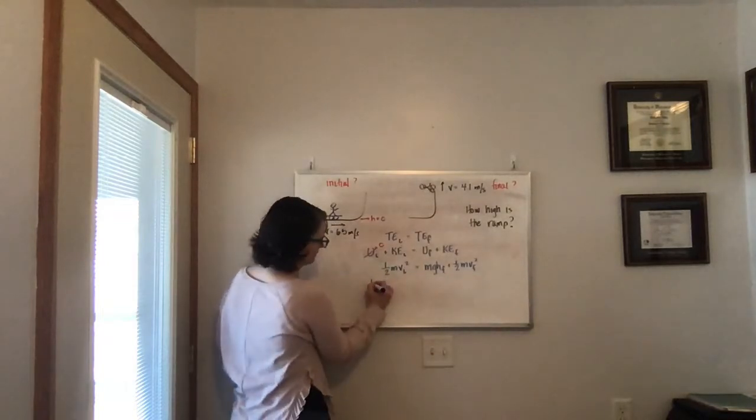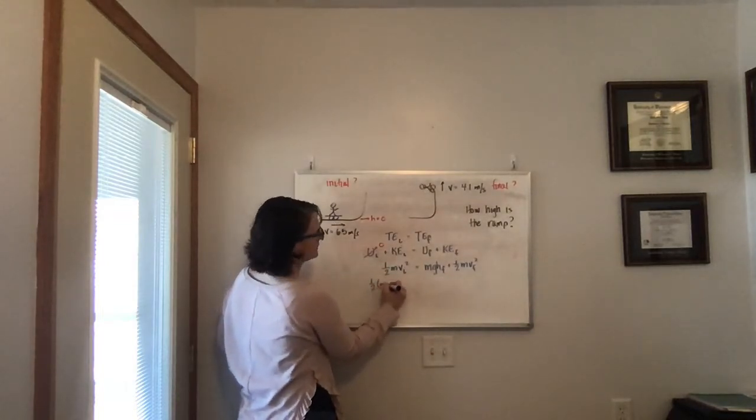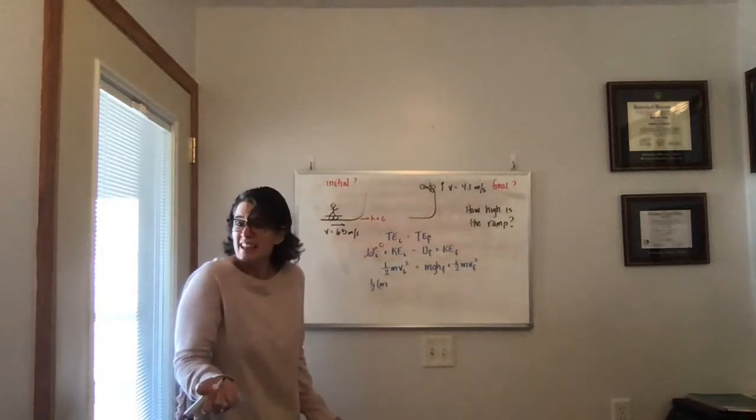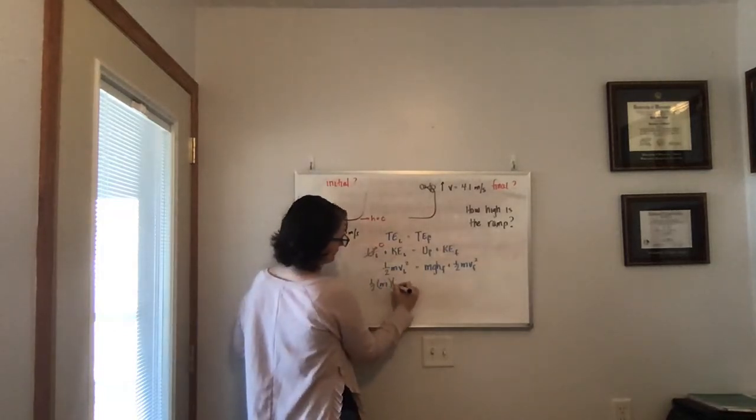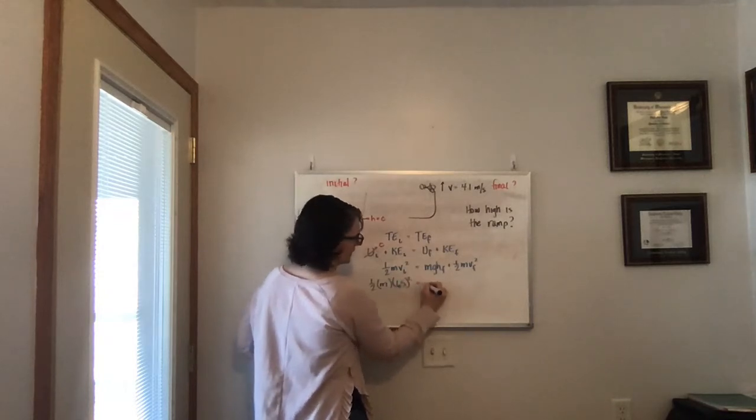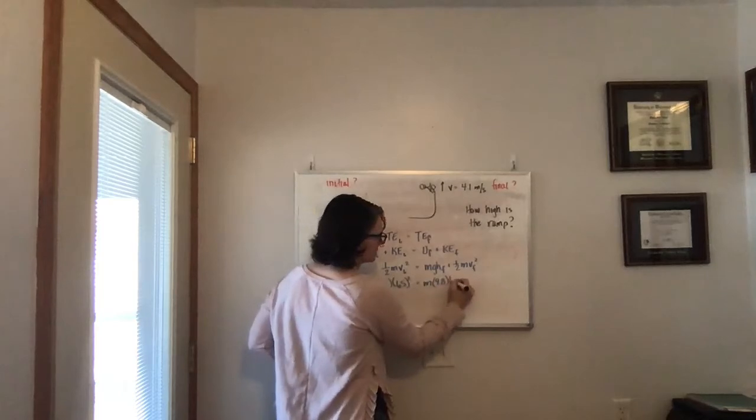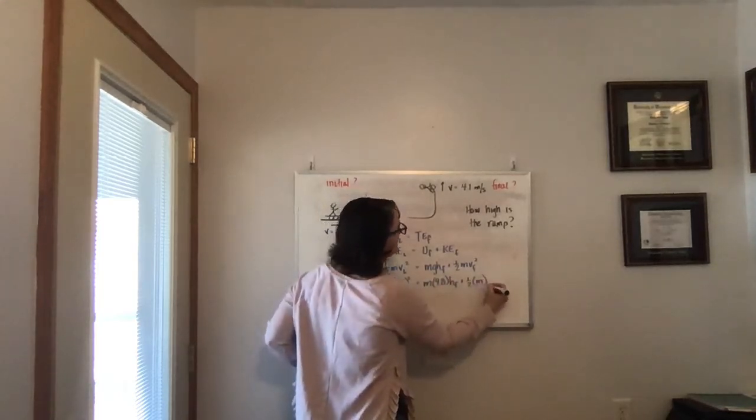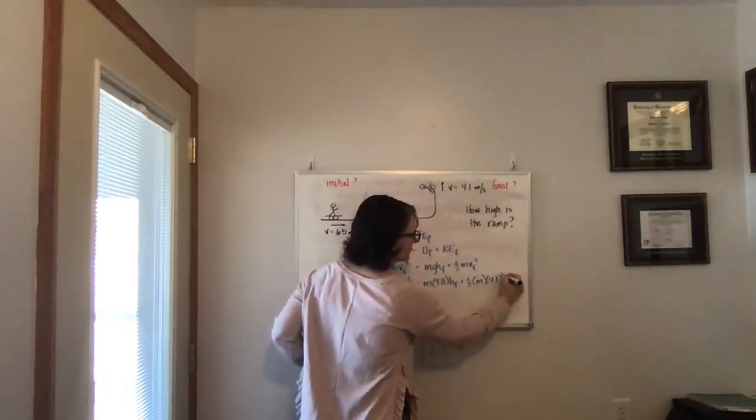So we have one half her mass, oh, I wasn't given her mass, so we'll leave it as an M and we'll see what happens, times her initial velocity of 6.5 squared equals, again, her mass. The mass times 9.8 times this final height that we don't know, plus one half her mass times 4.1 squared.